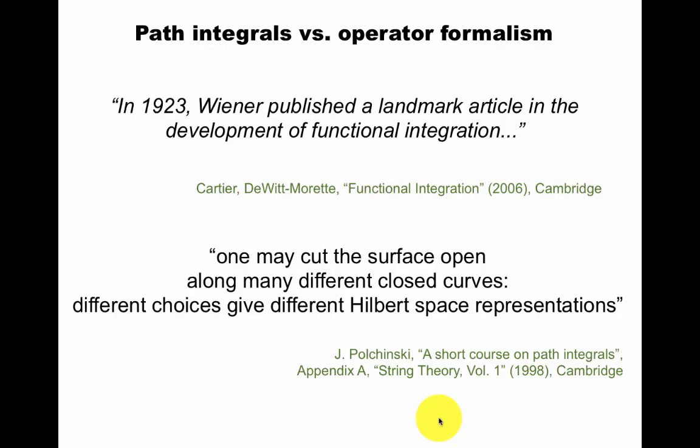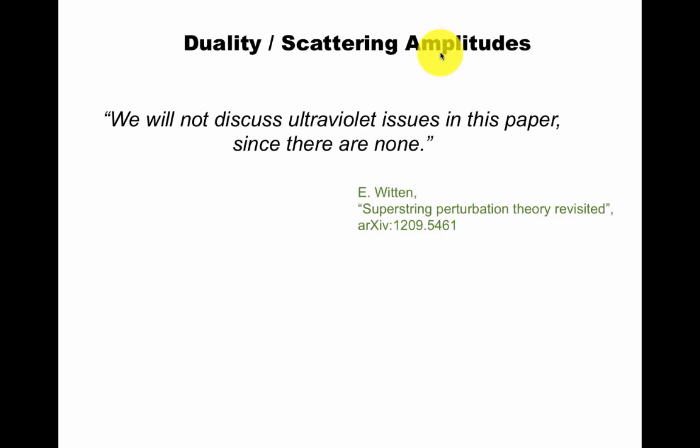So maybe string theory could help with this kind of discussion. In a similar vein, path integrals or functional integrals versus operator formalism, canonical quantization. These two descriptions of quantum theory are both useful and valid. Many people in physics think that it was invented strictly in physics, but actually Norbert Wiener published this article in 1923, as described by Cartier and DeWitt Moret in this book. So this is an interesting topic that maybe string theory can add something to. In Polchinski's textbook, for example, he has a short course on path integrals, where he argues, one may cut the world sheet surface open along many different closed curves. Different choices give a different representation of going from here to here.